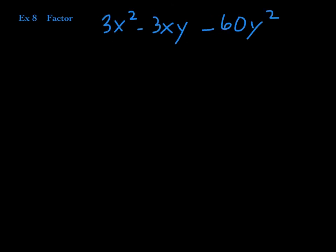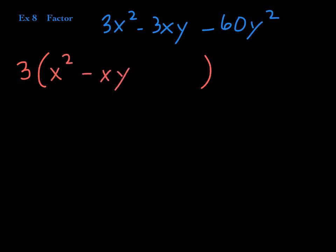Check out this trinomial. Consider the GCF — everybody has a 3, and that's it. The last term doesn't have any x's and the first term doesn't have any y's, so 3 is the best you can do. Factor out a 3 from every term, leaving you with x squared minus xy minus 20y squared.